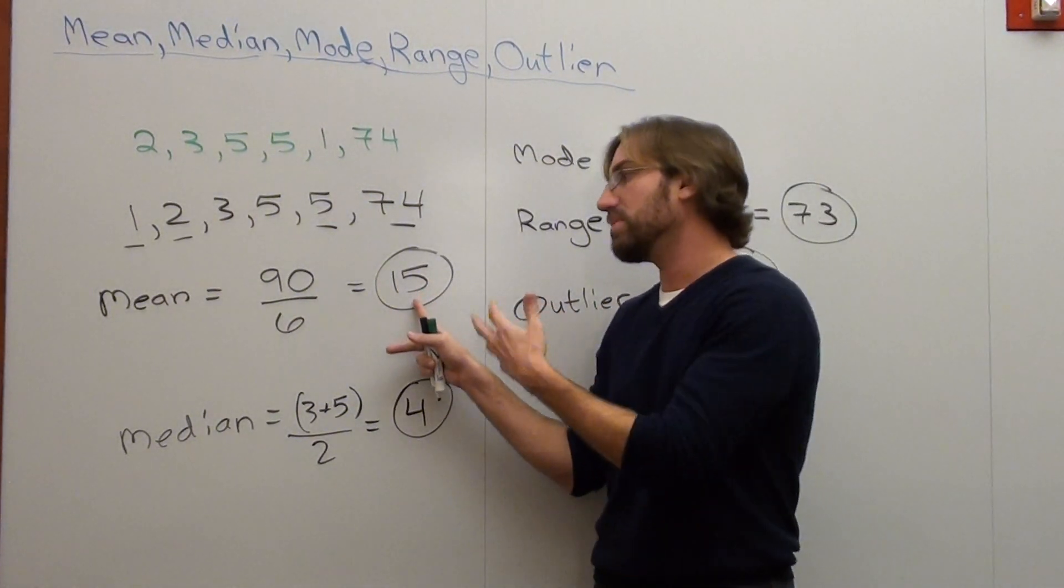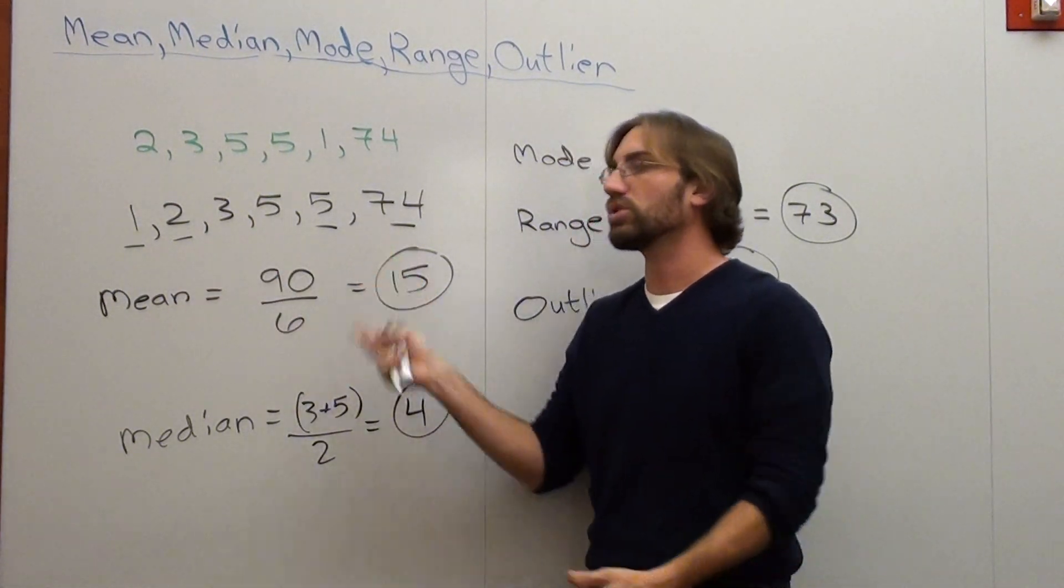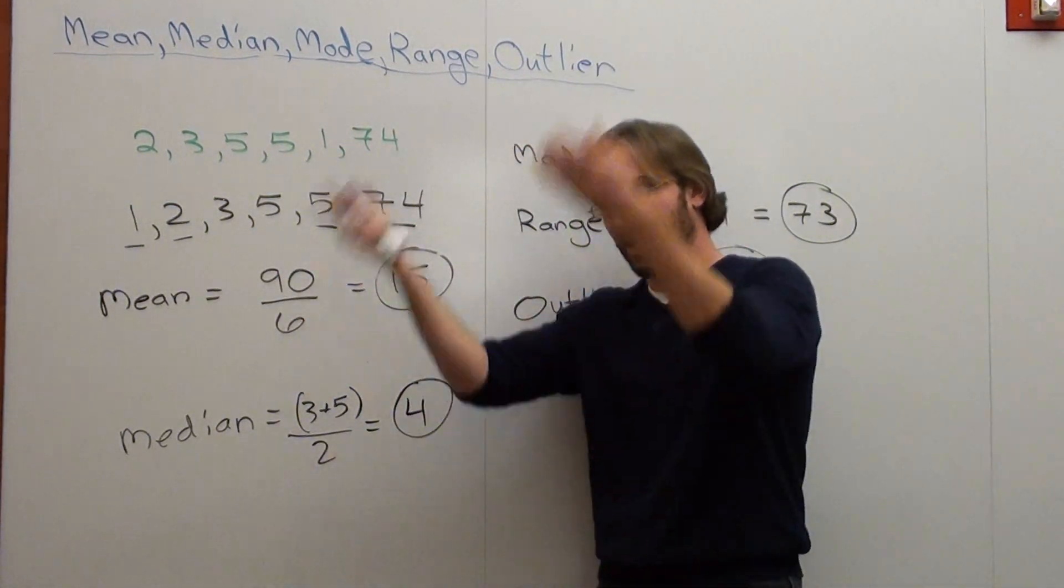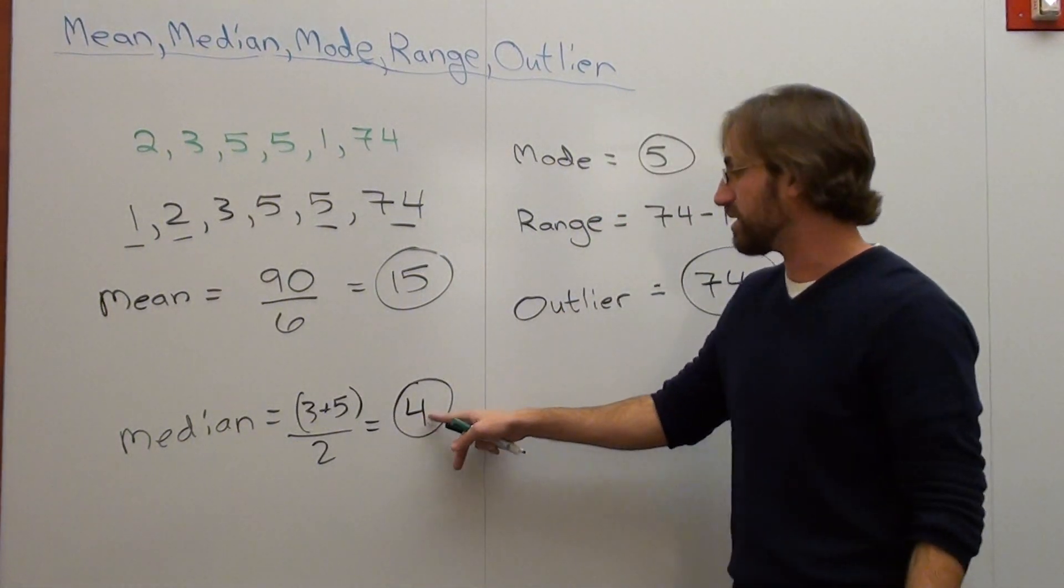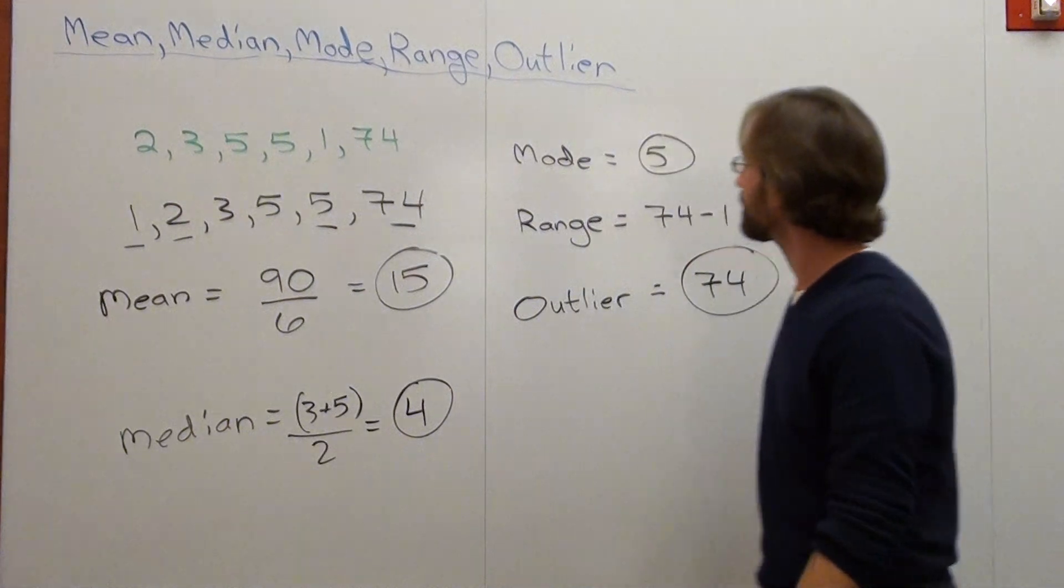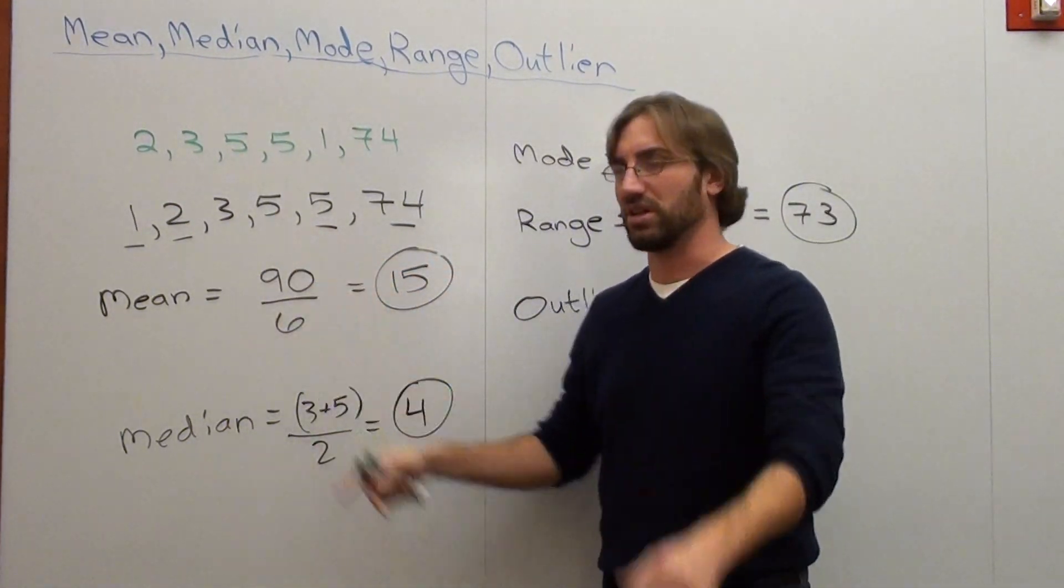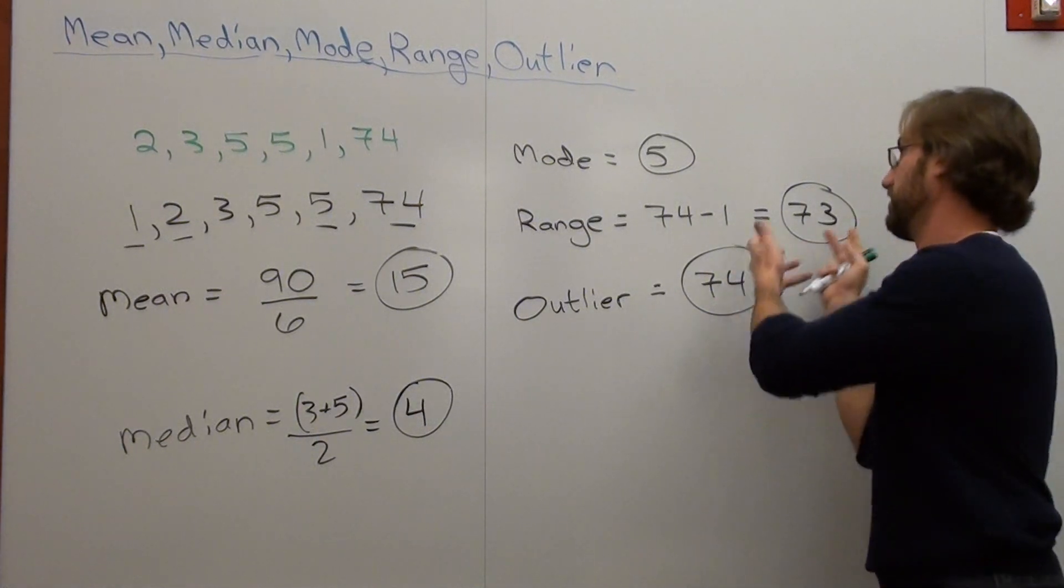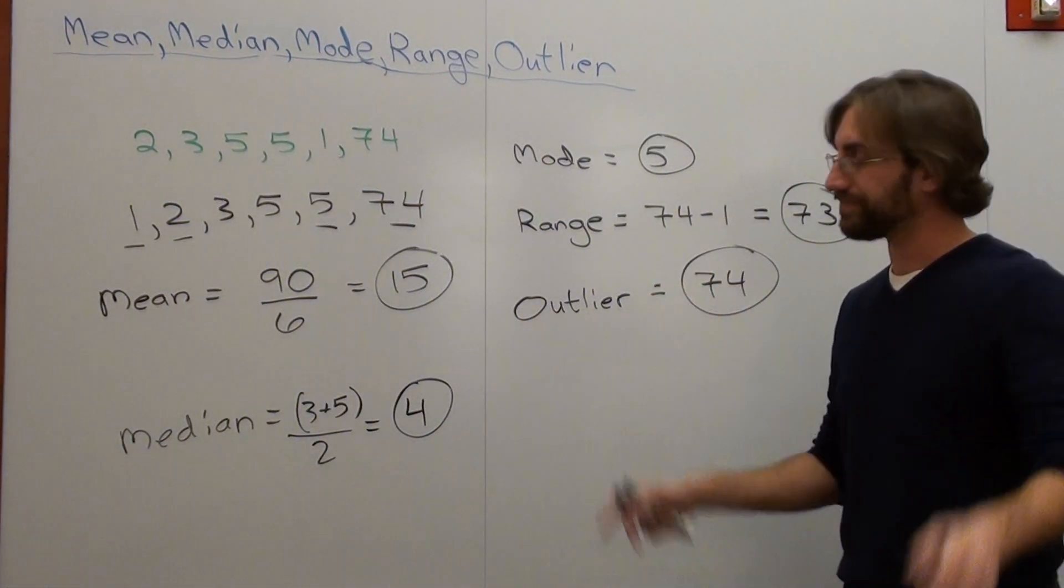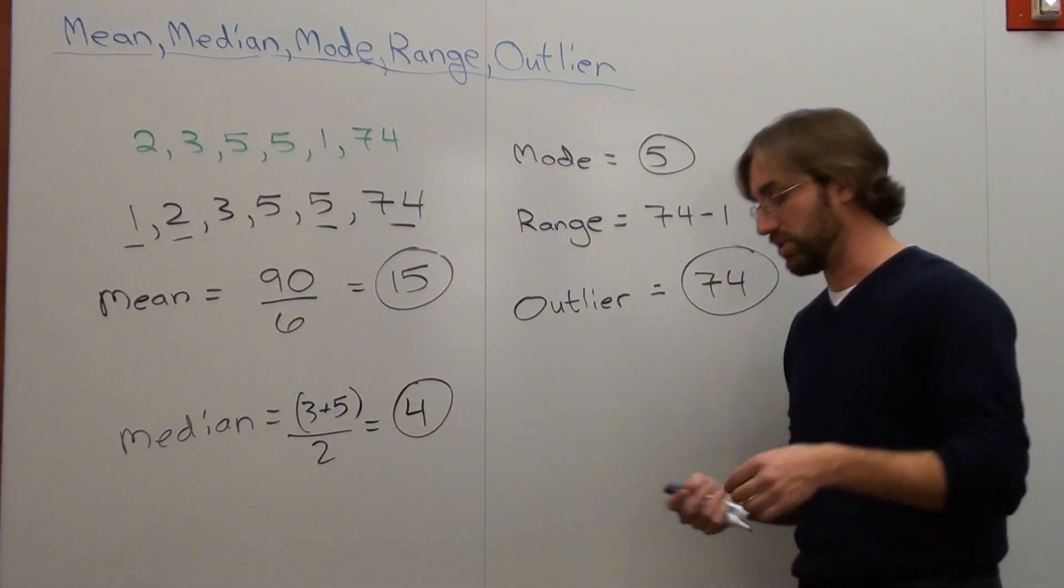Your mean average is 15. But that's actually not a good average, because if you look at all these, they're pretty low. This one skews it up. I mean, it doesn't skew it. It raises it up tremendously. This median is actually much closer. It's representative of the rest of the team. Mode is not really representative. It's just the number that you saw the most. Range, 73 range. That's a lot to say the least. And 74 being your outlier skews your data.